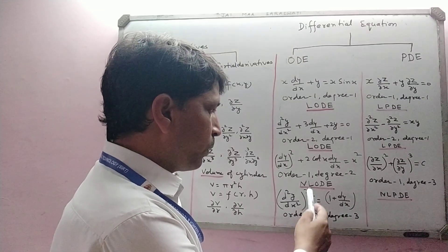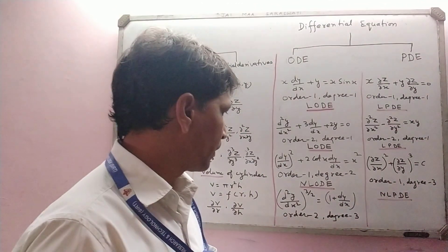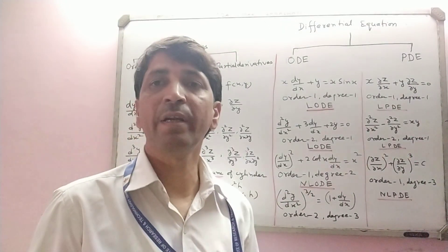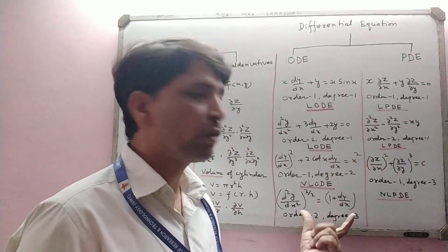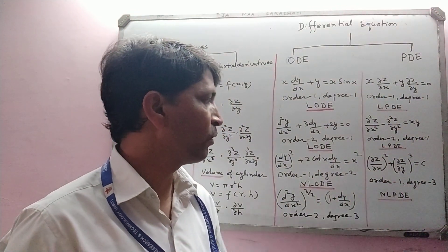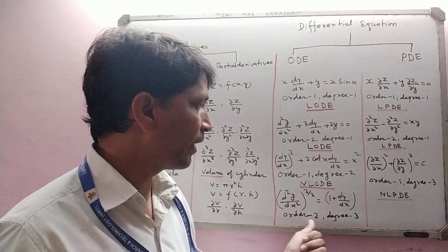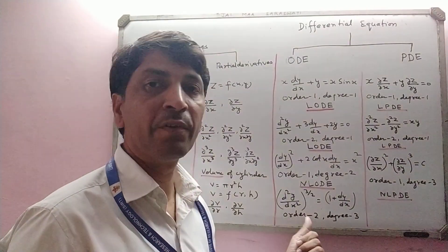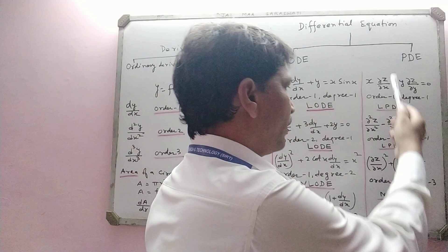Consider d²y/dx² raised to the power 3/2 equals 1 + (dy/dx). Since the power 3/2 is a fraction, we square both sides to get (d²y/dx²)³ = (1 + dy/dx)². In this case its order is 2 and degree is 3, so this is also an example of a nonlinear ODE.